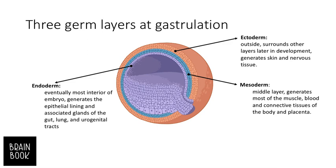During gastrulation we have three different germ layers: ectoderm, mesoderm, and endoderm. These layers go from the outside to the inside of the gastrula. The ectoderm is the outermost layer and is the origin of the skin and nervous system. The mesoderm is the middle layer and is the origin of most muscle, blood, and connective tissue of the body.